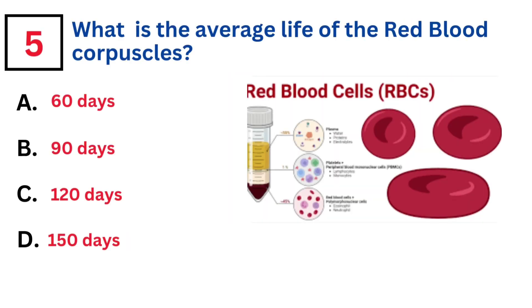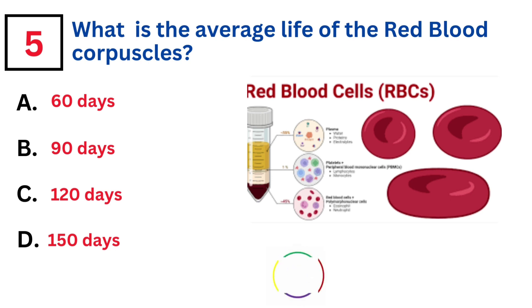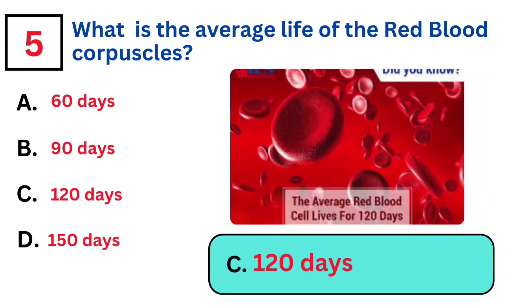What is the average life of the red blood corpuscle? Answer C. 120 days.